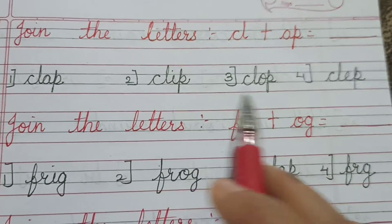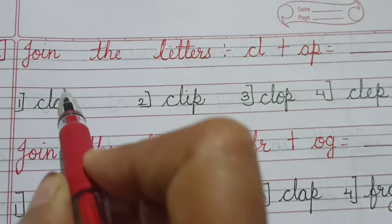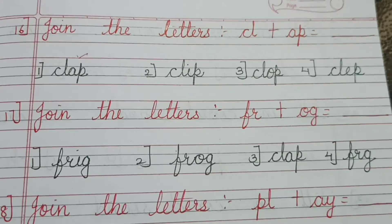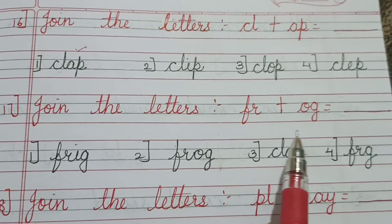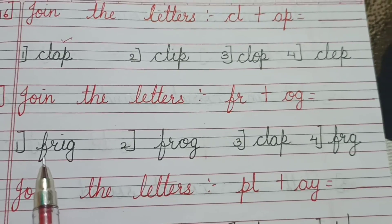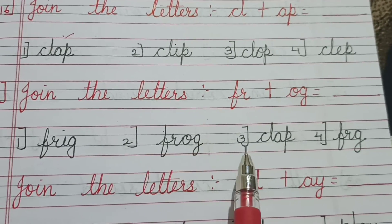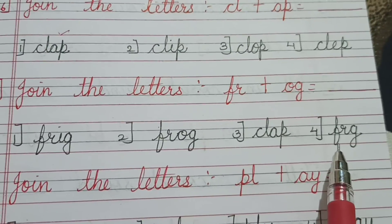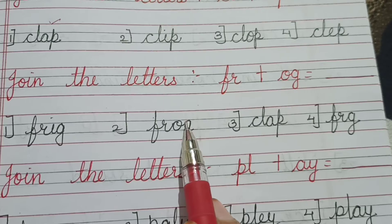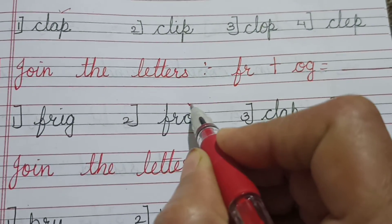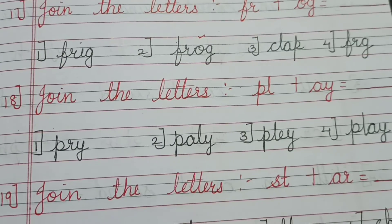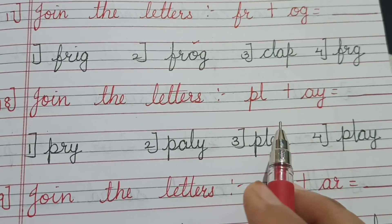Join the letters FR plus OG. Here I have given wrong answer options. The correct answer is F-R-O-G — frog. Yes, the correct answer is frog, F-R-O-G.